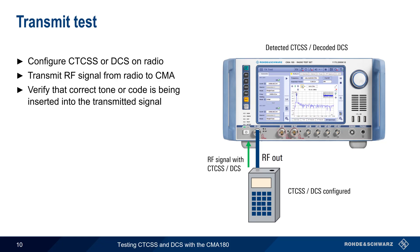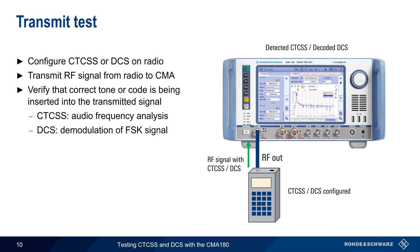This analysis is done differently depending on whether we're using CTCSS or DCS. For CTCSS, which uses a subaudible tone, we verify the tone by doing an audio frequency analysis and looking for the presence of the tone at the expected frequency. For DCS, the CMA demodulates the FSK-modulated digital code.